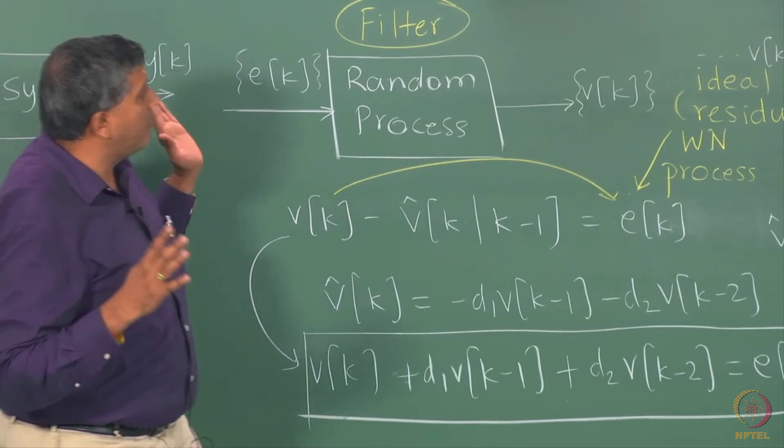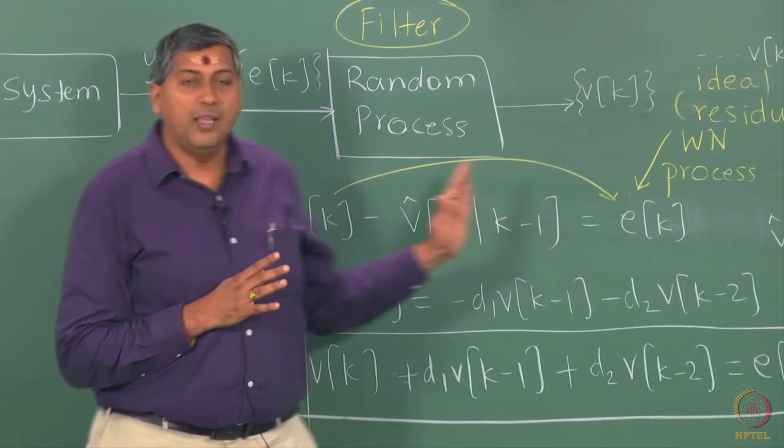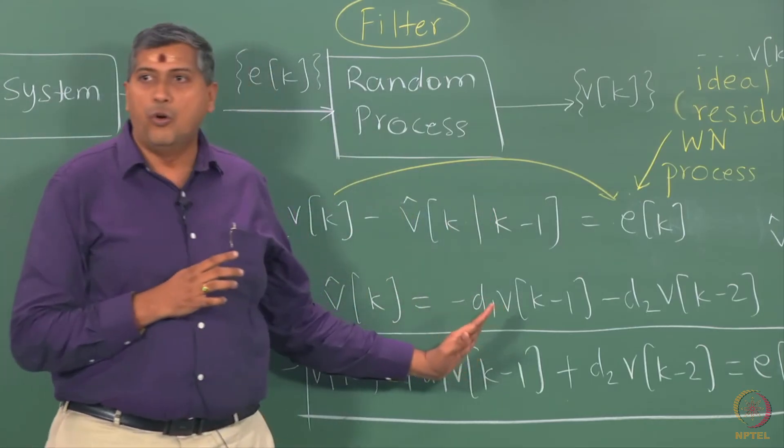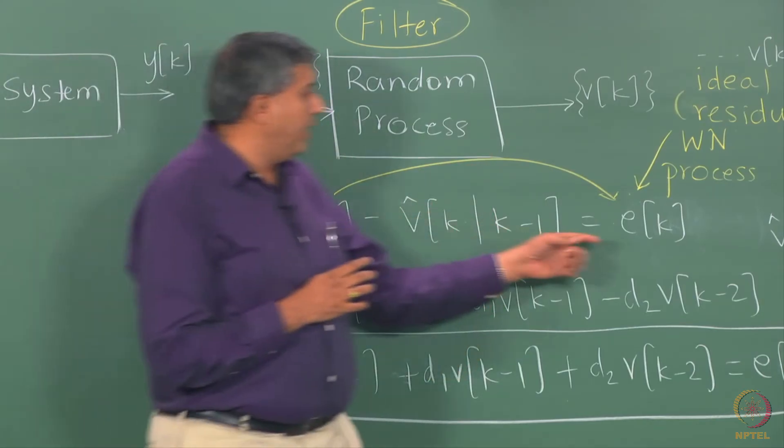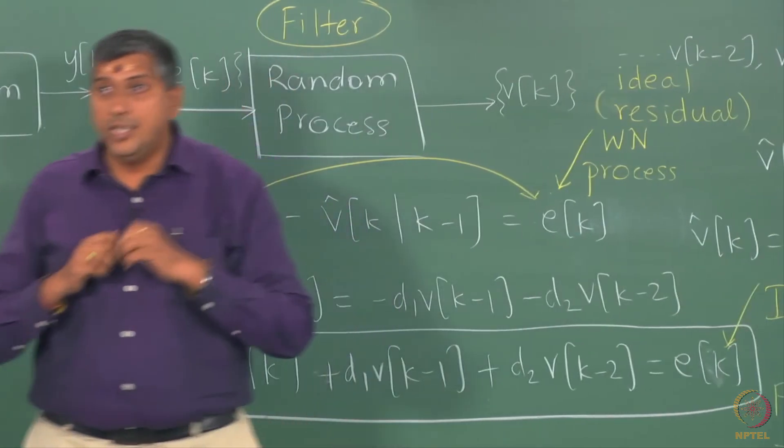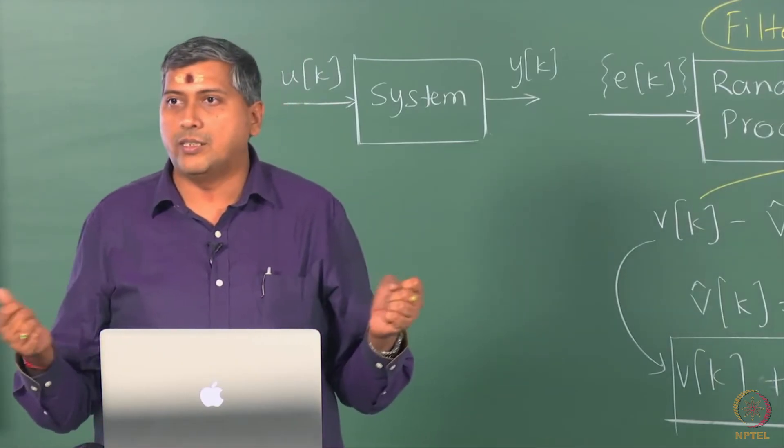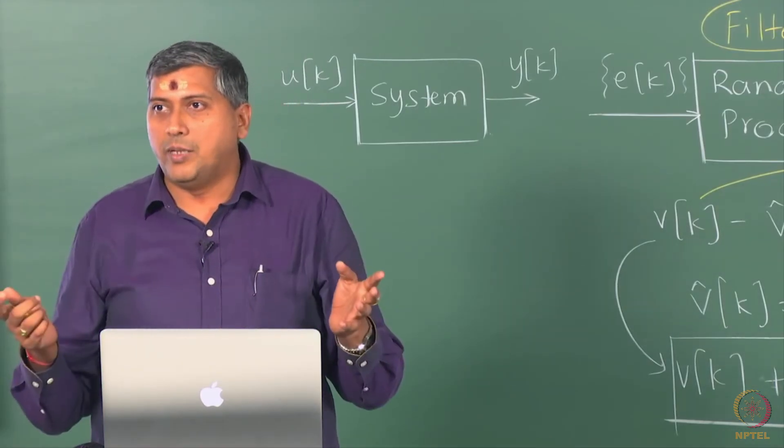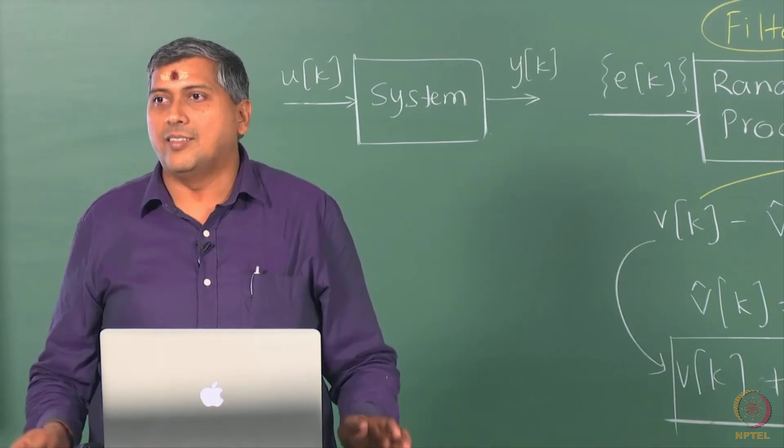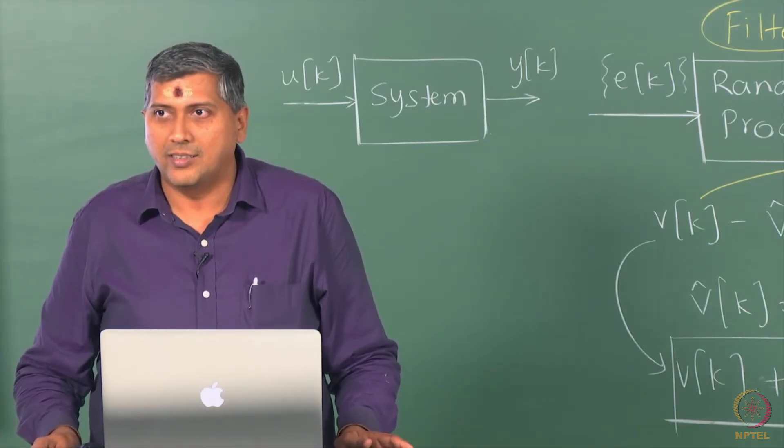We are studying this theoretical case where infinite observations are available, D1 is kind of known and so on. So, all we are saying is this EK is theoretically, it should be that residual whatever is left out, if I am given infinite observations, my model should be such that theoretically the residual has white noise characteristics, okay.